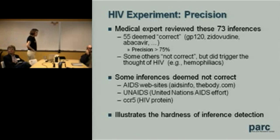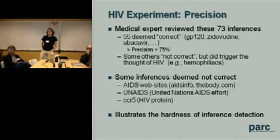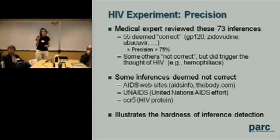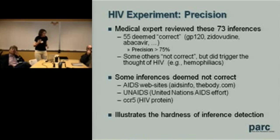We think 75% may be an underestimate, because a lot of things he thought weren't correct inferences I think would have made sense if we had a chance to explain them to him. There were things that wouldn't appear in a medical record — things like websites about AIDS or the UN AIDS effort — that were just out of context for him. This also indicates how hard it is to measure precision. Inference is sort of in the eye of the beholder.